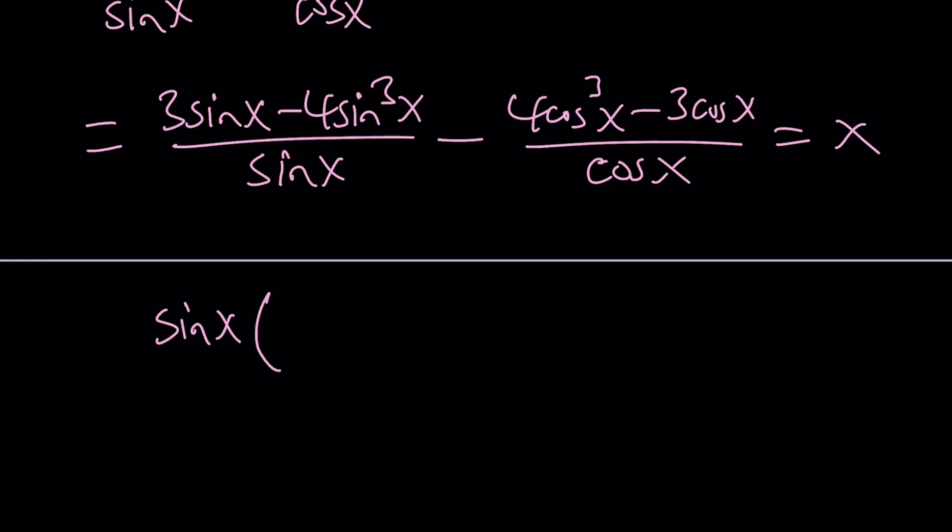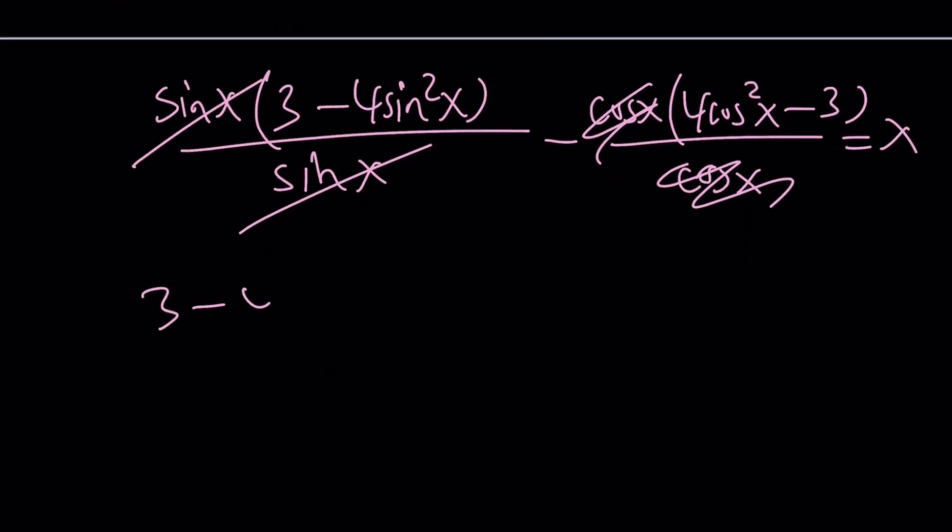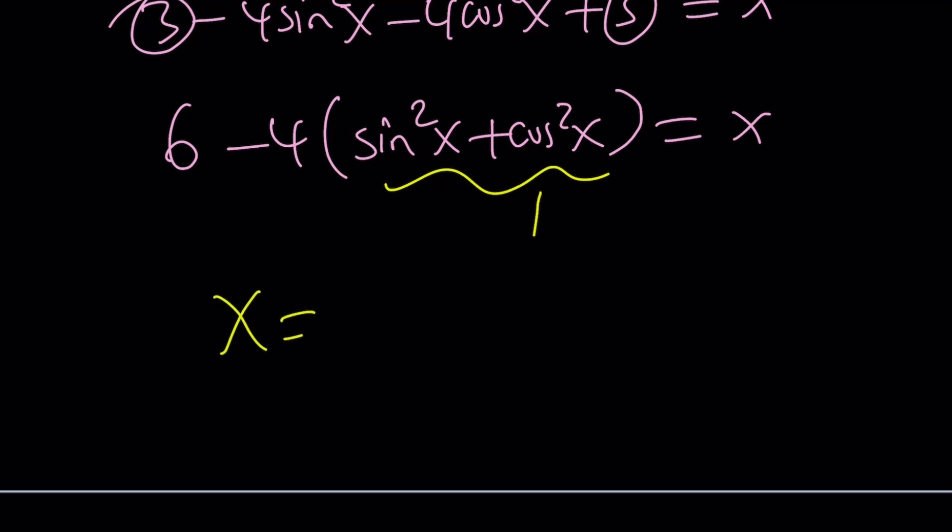Great. Let's go ahead and factor out a sin(x) here. Here we get 3 - 4sin²(x) divided by sin(x) minus cos(x) take out 4cos²(x) - 3 and divide it by cos(x). Notice that sin(x) and cos(x) should not be 0. Under those conditions, go ahead and cancel them out. And then from here we get the following: 3 - 4sin²(x) - 4cos²(x) + 3 = x. Now we can go ahead and add the 3 plus 3 which is 6 and then take out a negative 4. That's going to give us sin²(x) + cos²(x) and that is equal to 1. Hmm, that's interesting. And we get x = 2 from here.